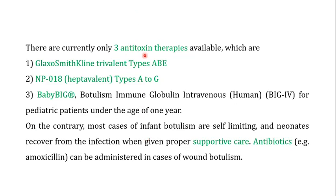There are currently only three antitoxin therapies available. The first is the GlaxoSmithKline trivalent type A, B, and E — effective only against type A, B, and E toxins, which are the common toxins causing disease in humans. The second is NP-018, which is heptavalent and polyvalent in nature, and can bind to toxins A through G. It can bind to seven types of toxin, hence called heptavalent.